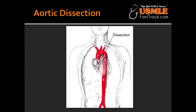What are some of the conditions that predispose you to aortic dissection? Some of the conditions that predispose you to aortic dissection include hypertension, bicuspid aortic valve, cystic medial necrosis, and inherited connective tissue disorders such as Marfan syndrome.